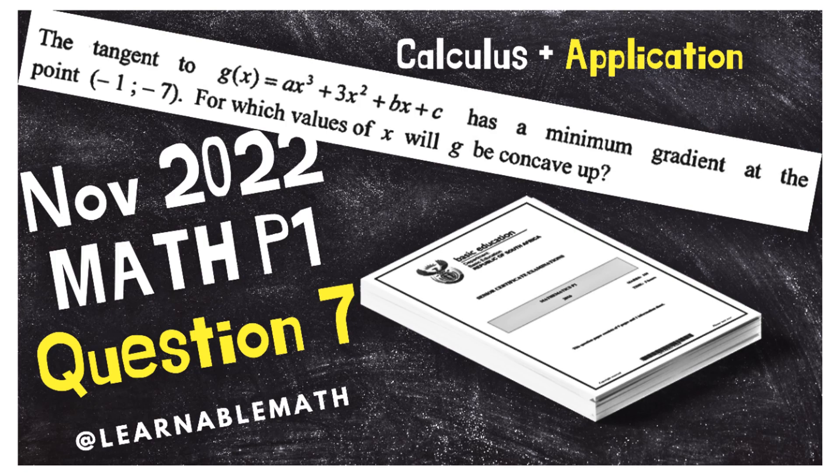I know there's a simple approach to solving this question where you can just memorize that when the gradient is minimum, the x value that makes it minimum is the same as the x value of the point of inflection. But the danger of memorizing is if you forget, you're in trouble. We want to explore the conceptual part using the application of calculus, which is connected to what we learned in the previous session. If you haven't watched it, I really advise you to watch question nine to enable your relational understanding and deepen your conceptual understanding in calculus.